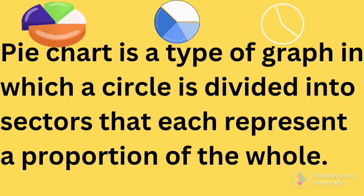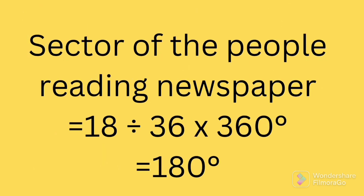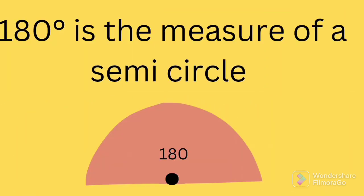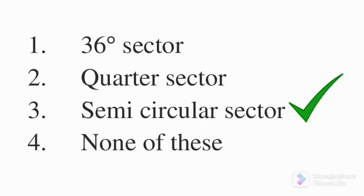Pie chart is a type of graph in which a circle is divided into sectors and each sector represents a proportion of the whole or part of the whole. Therefore sector of the people reading newspaper is equal to 18 divided by 36 into 360 degrees, which on simplification gives 180 degrees. We know that 180 degrees is the measure of a semicircle as you can see in the figure also. Therefore semicircular sector is the correct answer.